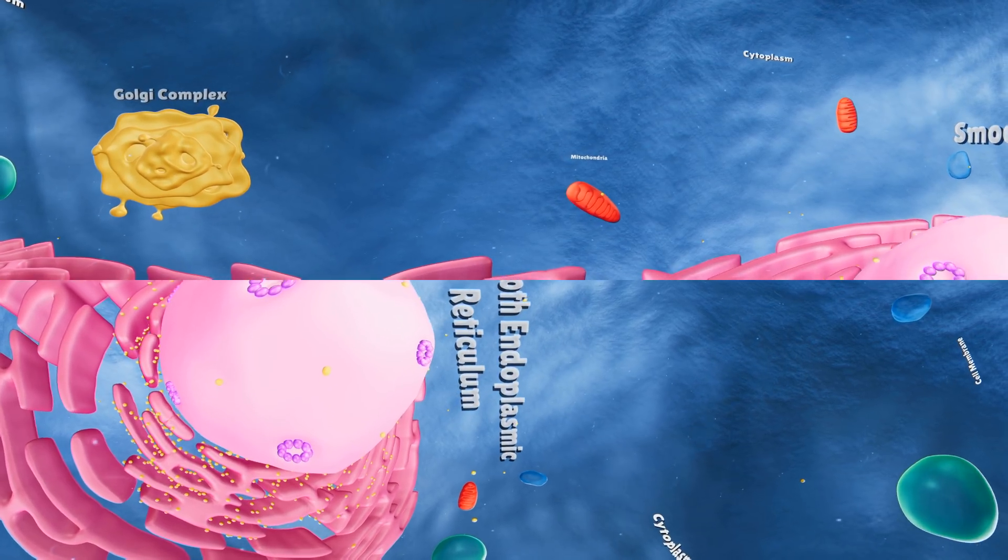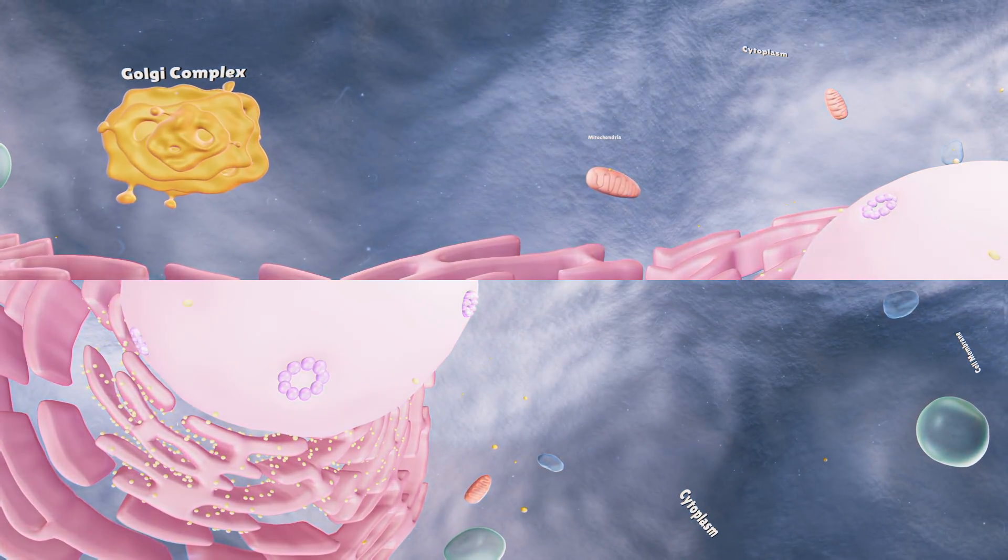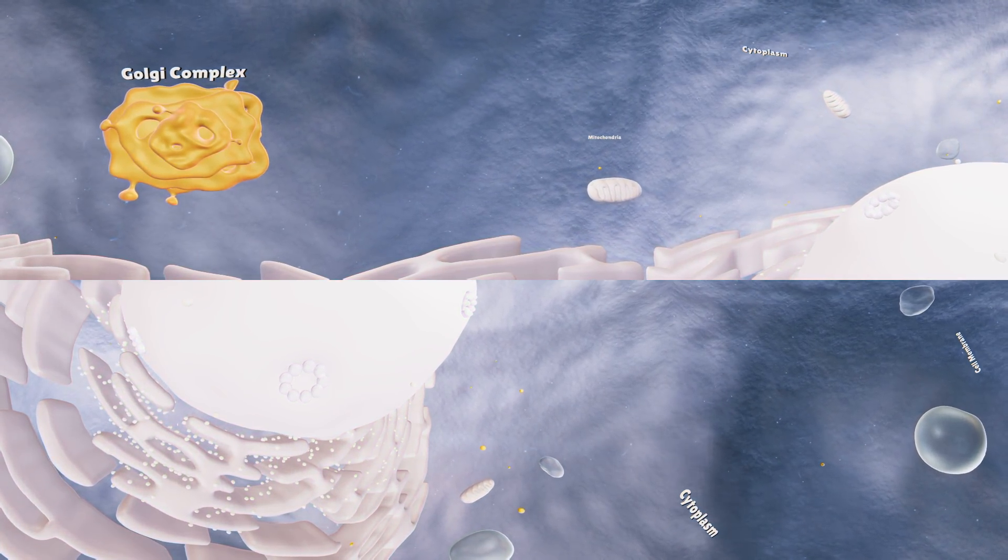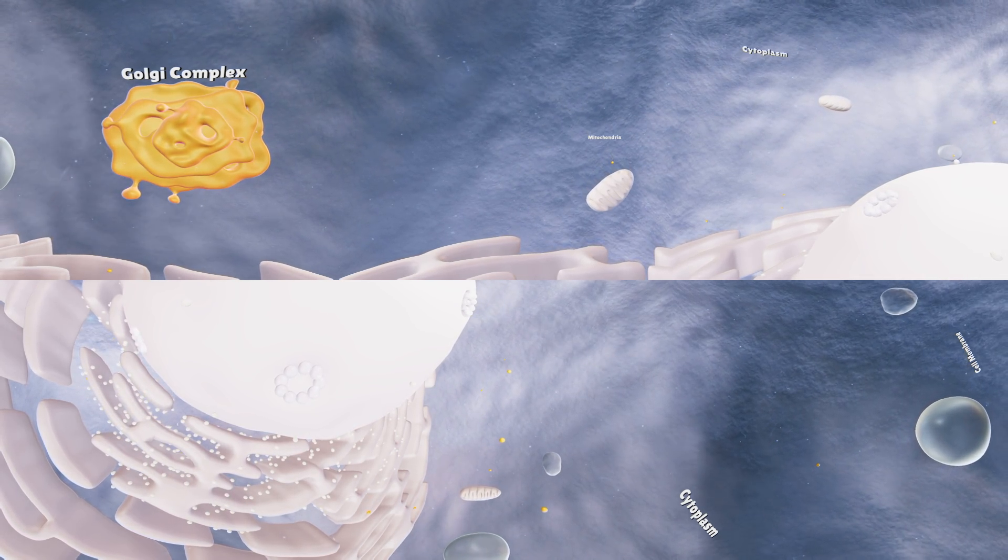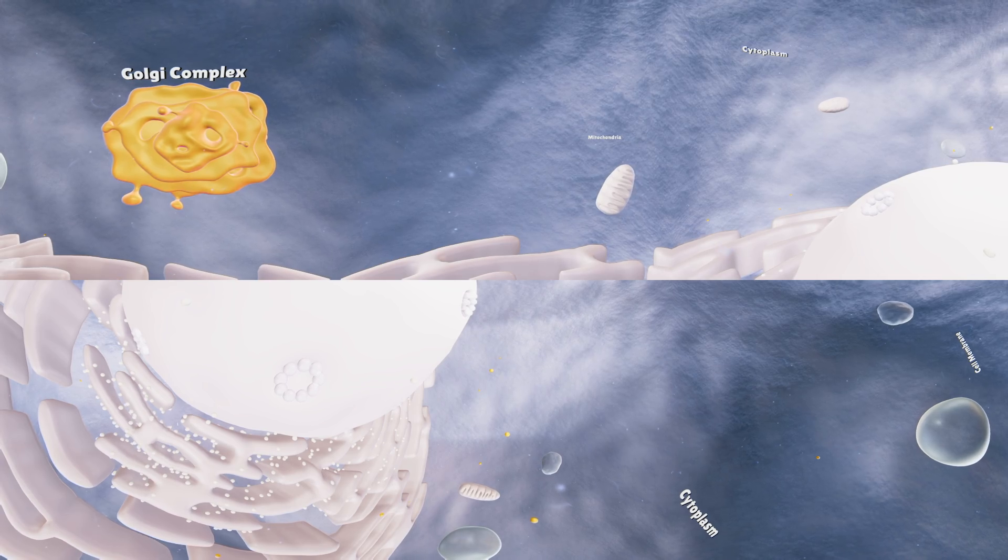Here we have the Golgi complex. It acts like the cell's very own post office. It ships the proteins made by the endoplasmic reticulum to the other parts of the cell.